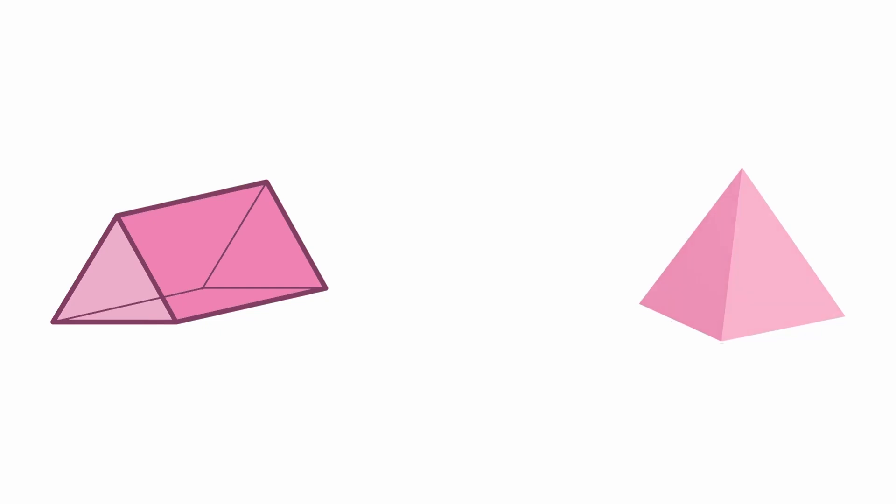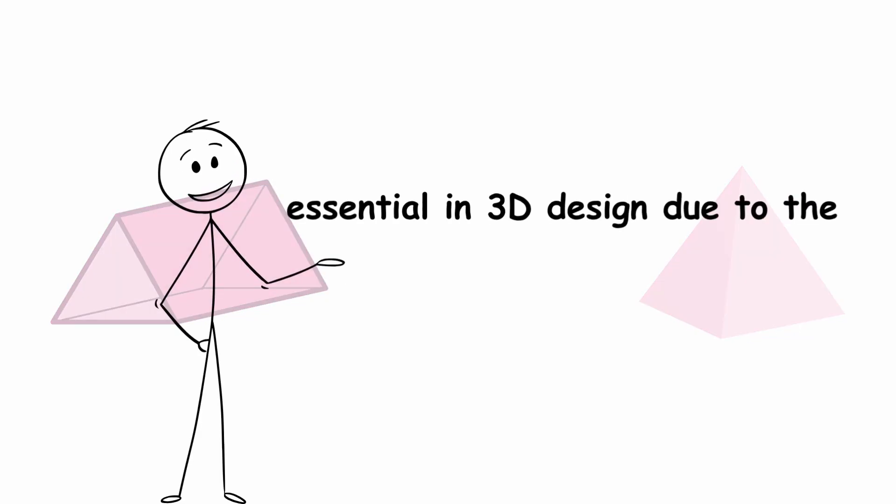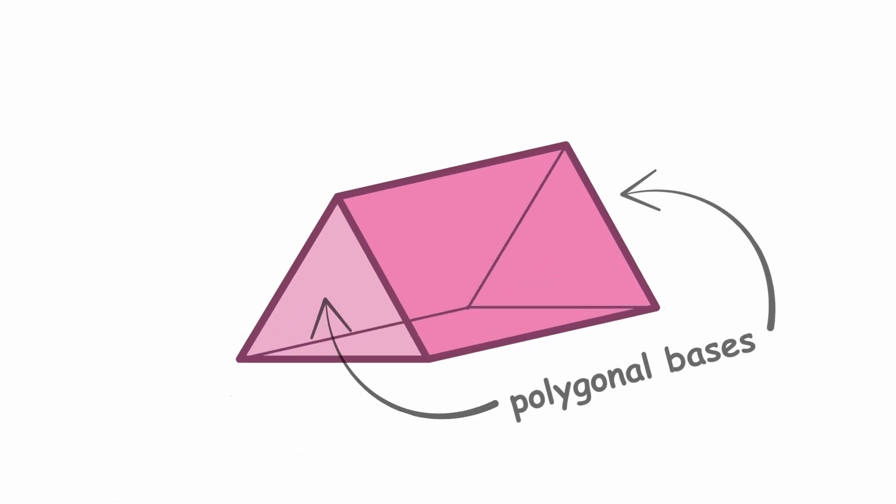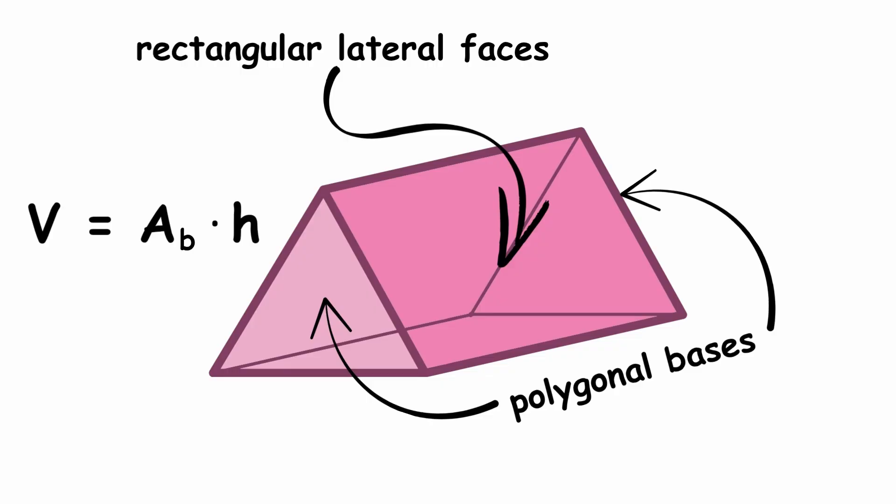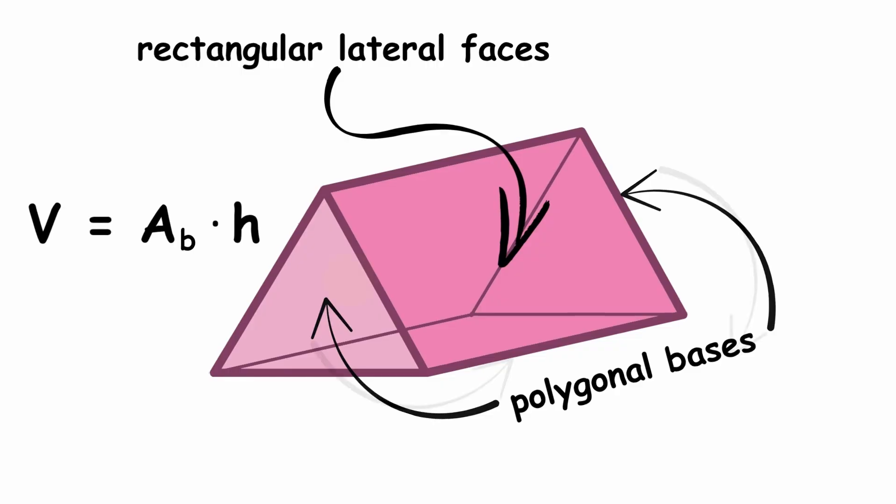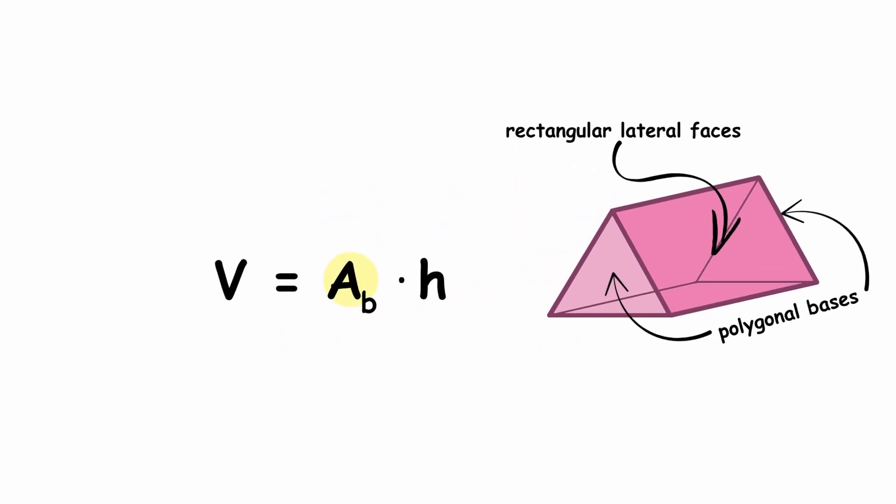Prisms and pyramids are essential in 3D design due to their ease of modeling and structural efficiency. A prism is defined as a solid with two congruent polygonal bases and rectangular lateral faces. Its volume is calculated as V equals AB times H, where AB is the area of the base and H the height.